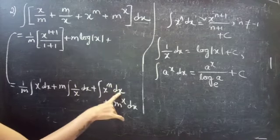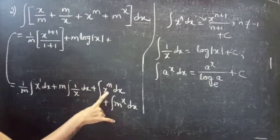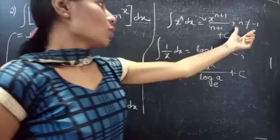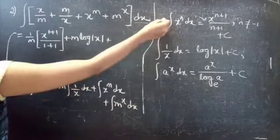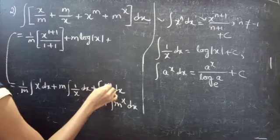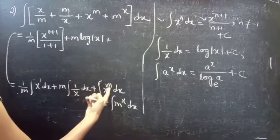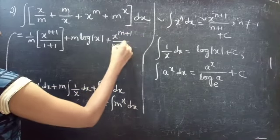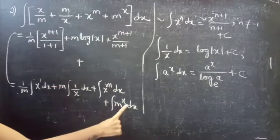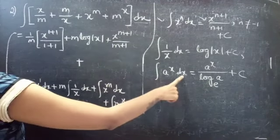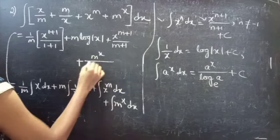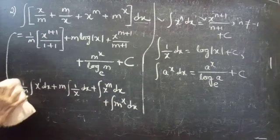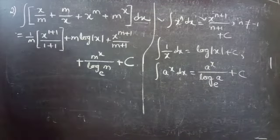For integral x^m dx, here m is a constant and this is of the form x^n, so integral x^n dx equals x^(n+1) divided by (n+1) for n not equal to minus 1. We apply the formula since n equals some constant, giving x^(m+1) divided by (m+1).